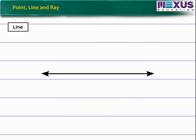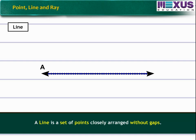Observe the given figure. As the space between the points decreases, they join to form a line. That is, line A is a set of points closely arranged without gaps.